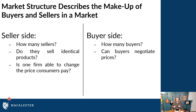Market structure simply describes the makeup of buyers and sellers in a particular market. So you take a specific market — let's say the market for gasoline in the Twin Cities area — and when you define the market structure, you have to define both the seller side and the buyer side of that market.